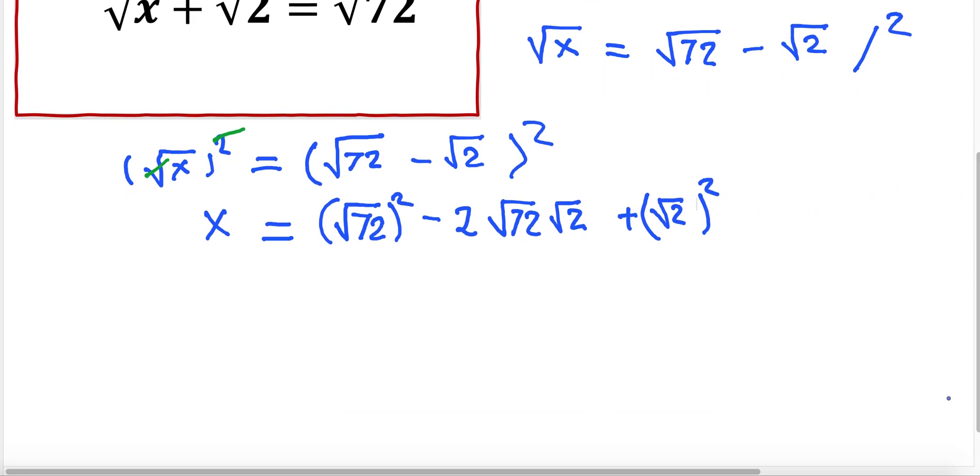Let me make some space. So x is going to be equal—the square with the index will simplify. What is going to remain? Here is going to remain 72, and here is minus 2 times 72 times 2, which is 144, and here is plus 2. 72 plus 2—those are like terms.